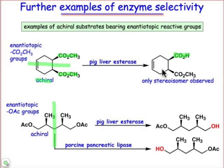How can it be that an enzyme is able to distinguish enantiotopic groups? Remember when we talked about enantiotopic groups — they can be distinguished by a chiral probe. The enzyme active site is chiral, and it is therefore capable of distinguishing the different enantiotopic groups. One undergoes reaction, one doesn't — a remarkable substrate specificity for these enantiotopic groups.